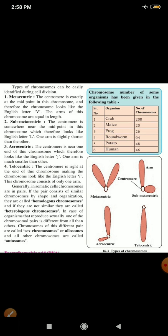Now, first one. Type of chromosomes. Metacentric. The first one you can see. The centromere is exactly at the midpoint of the chromosome. And therefore, this chromosome looks like the English letter V. The arms of this chromosome are equal in length.